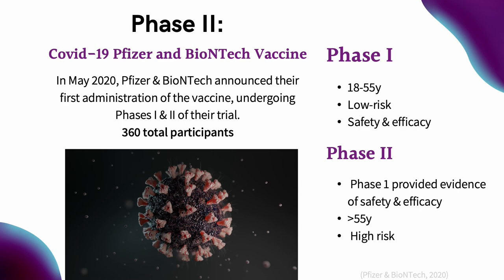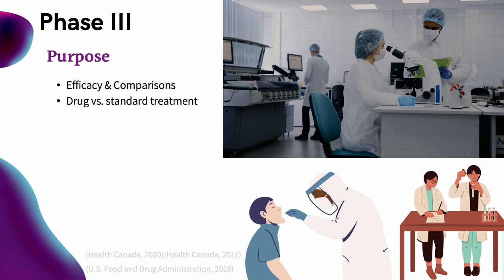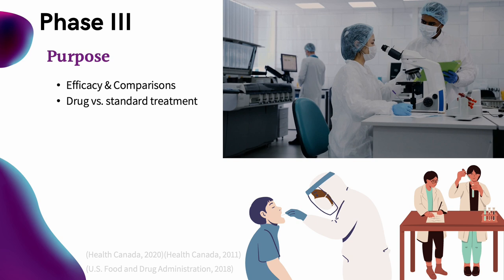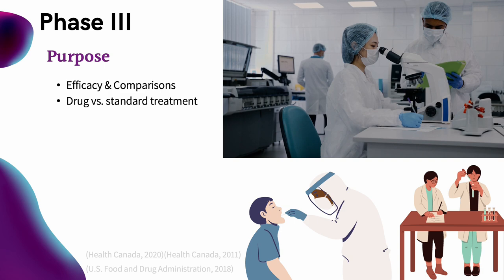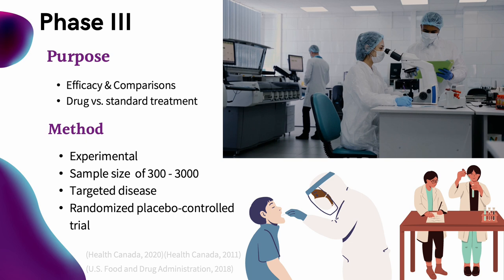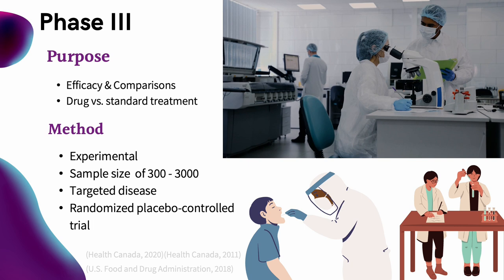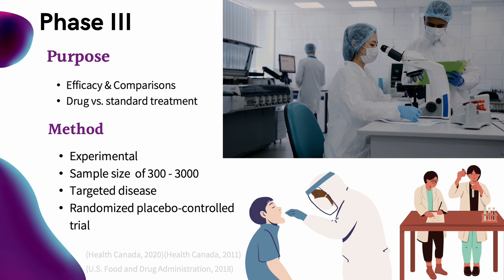Phase 3 is one of the more time-consuming phases of a clinical trial because it has so many components. The purpose is mainly efficacy and comparison of the drug to the standard one already on the market, to determine if the drug is making any advancements that a previous one has not already achieved. The method of data collection is experimental, with a sample size ranging from 300 to 3,000 individuals with the targeted disease. Among researchers, a randomized placebo-controlled trial, or RCT, is considered the standard for testing drugs in this phase.